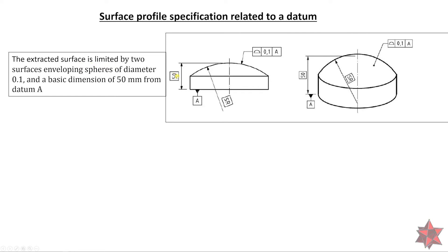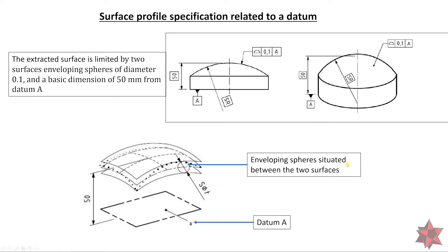For the surface profile specification related to a datum, the extracted surface is limited by two surfaces enveloping spheres of diameter 0.1, with a basic dimension of 50 millimeters from datum A. The profile is related to that datum. The sphere is constrained to be exactly 50 millimeters from datum A, so the surface profile must respect both its form and the distance from datum A.